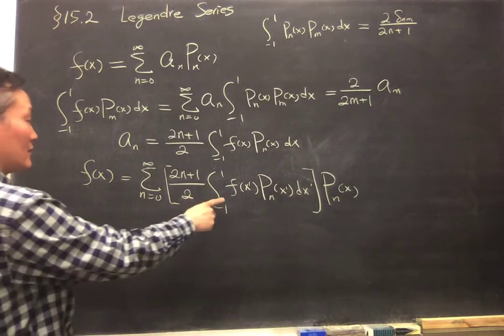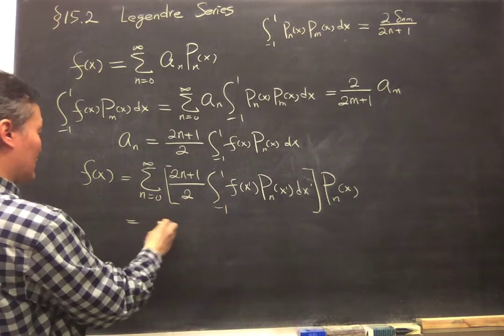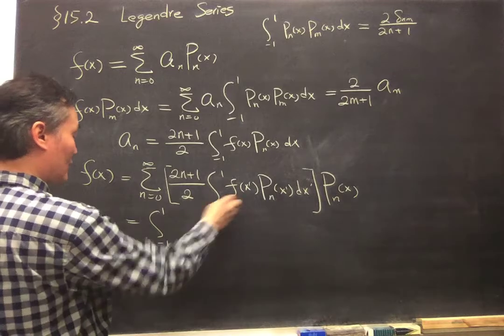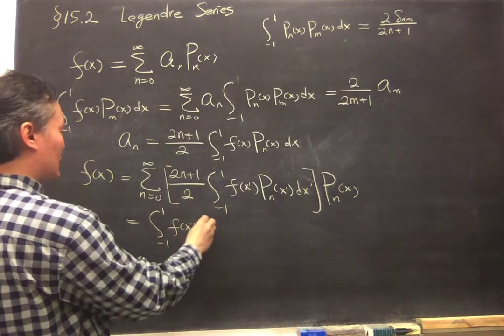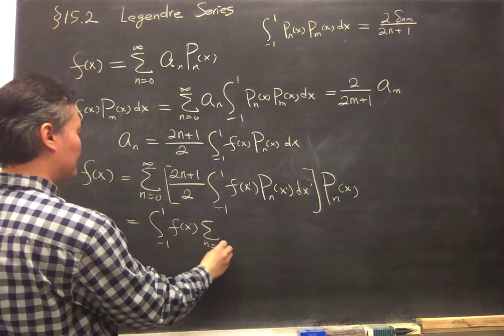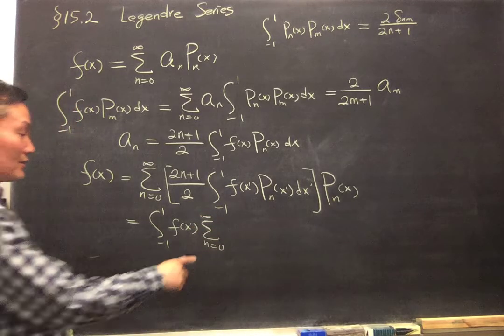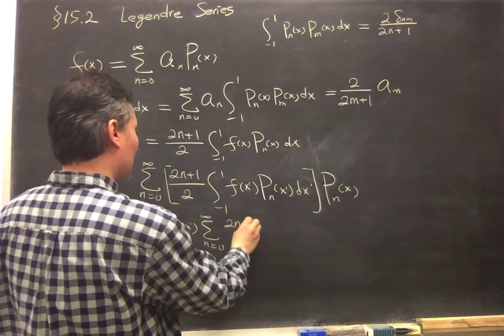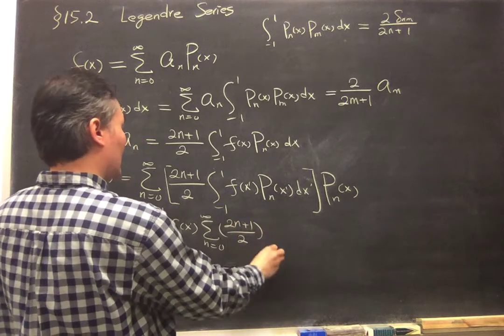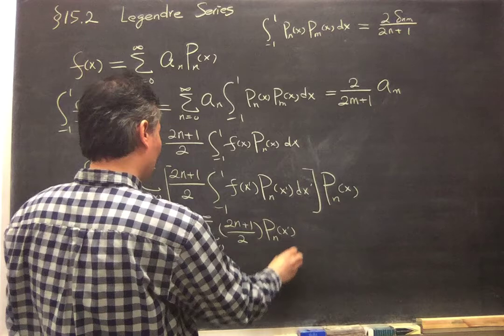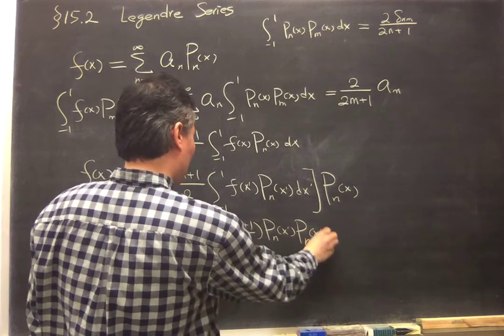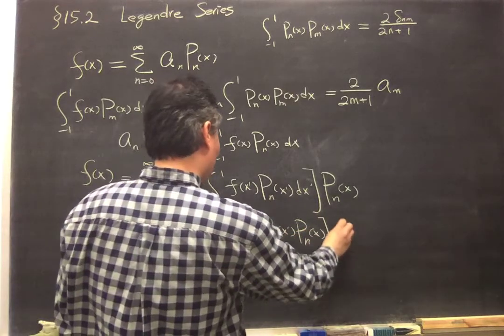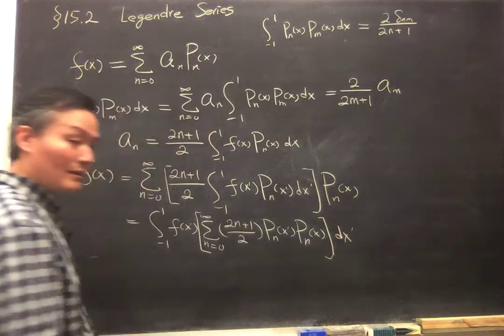And we can rewrite the whole thing as put the integration out, and put the f(x prime) out, and put everything else inside this summation, sum of n from 0 to infinity, and you have 2n plus 1 over 2, and then P_n(x prime), P_n(x), and dx prime.